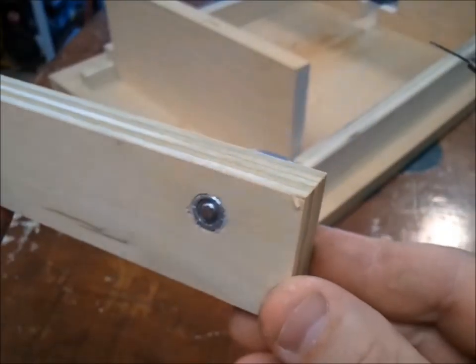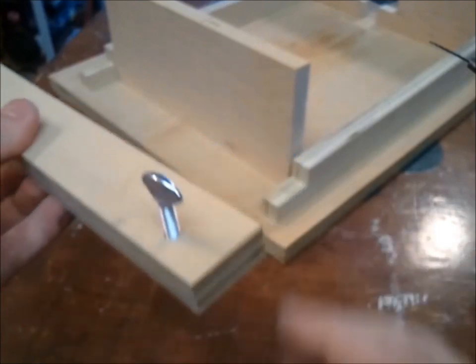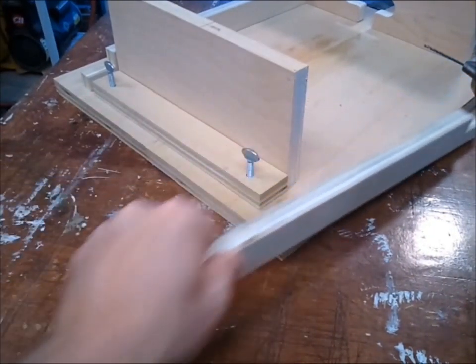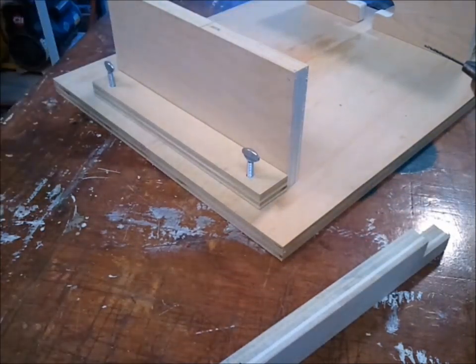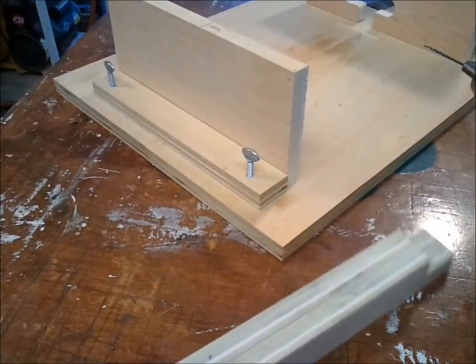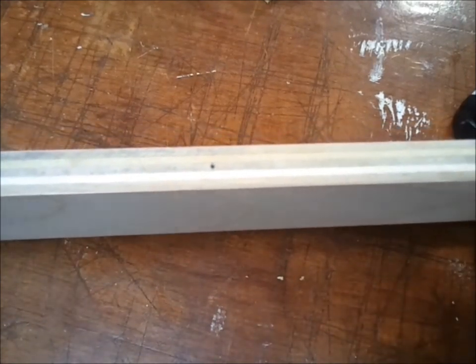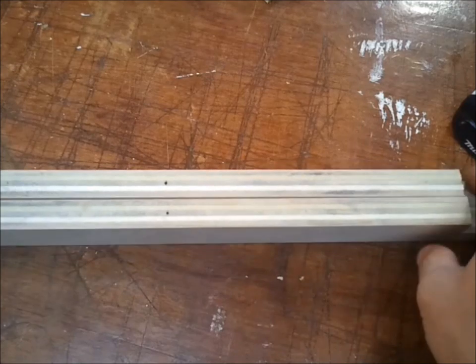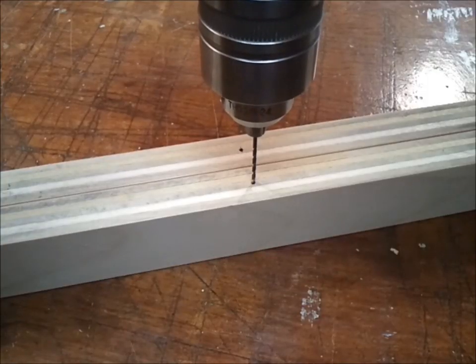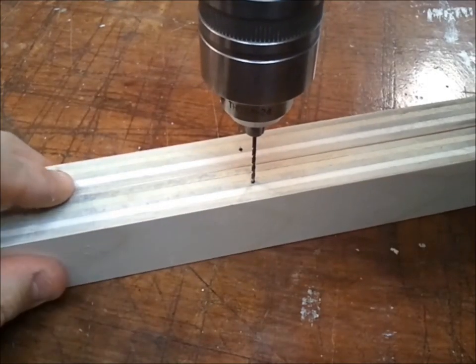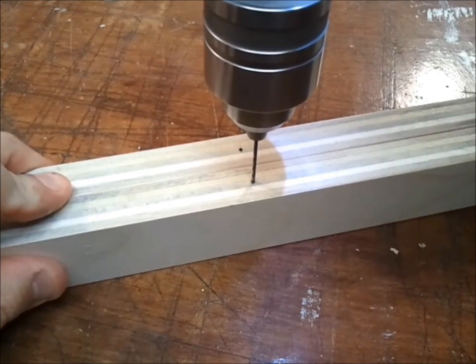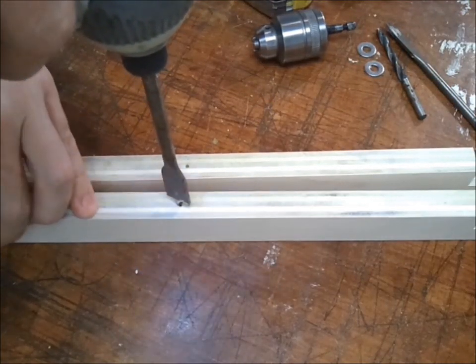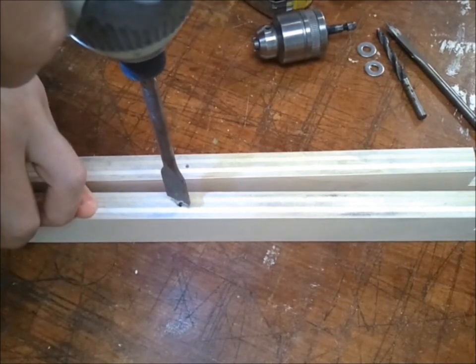Now that the height adjusters are in place, I want to work on the side rails. Find the exact center on both the top and bottom of each side rail. Now I'm going to drill a tiny pilot hole all the way through. On the top, let's just scratch the surface just deep enough to put a washer.